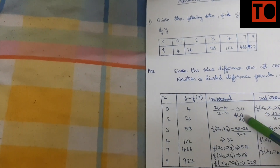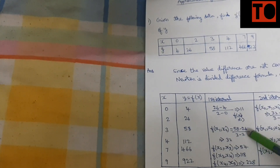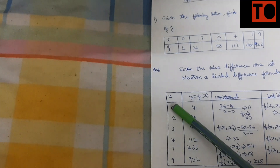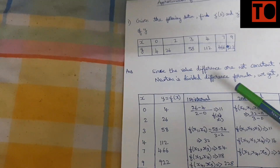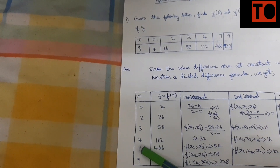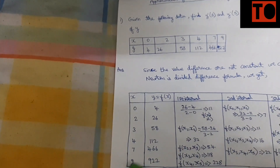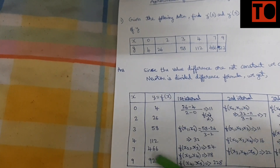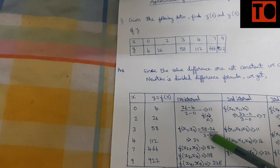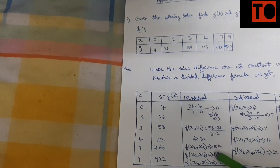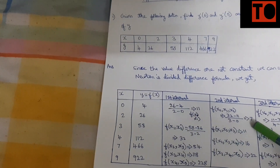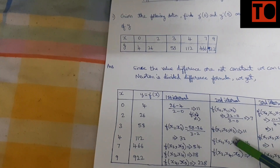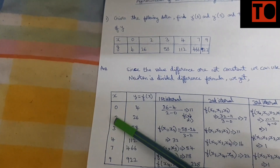For example, computing the first divided differences: 32 minus 11 divided by the difference in x, then 4 minus 2, then 7 minus 3, then 9 minus 4. The next interval value uses the previous divided difference values, for example 11 minus 7 for the numerator.